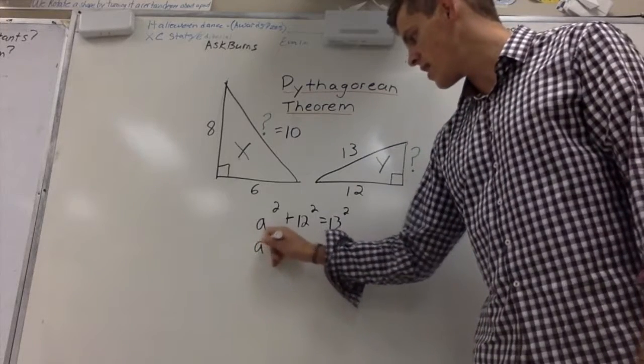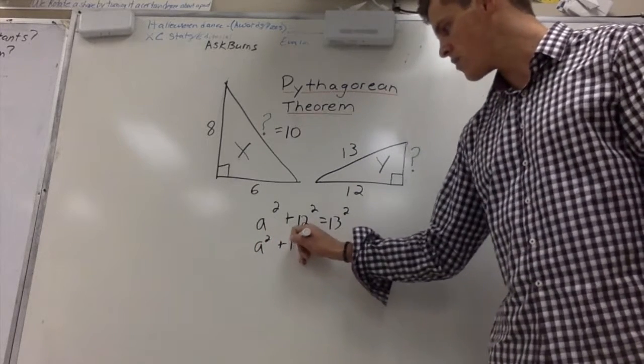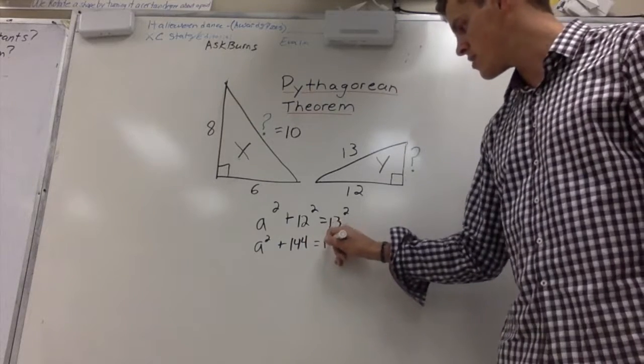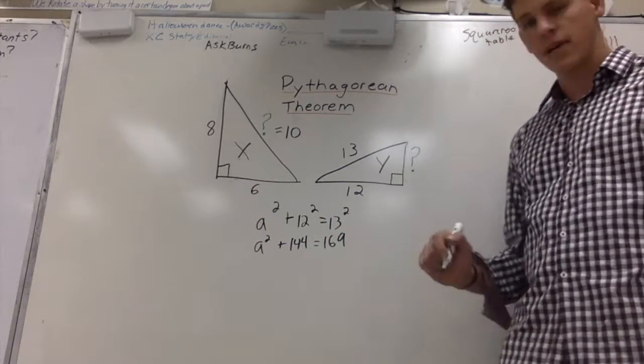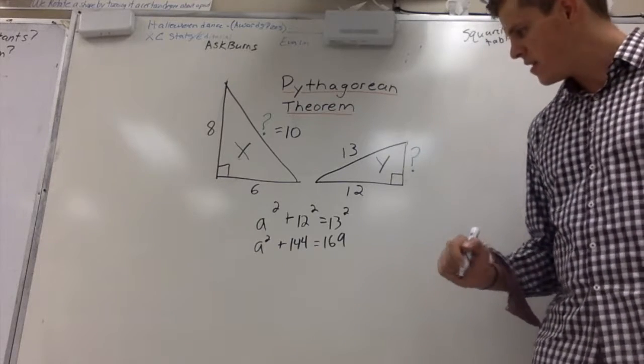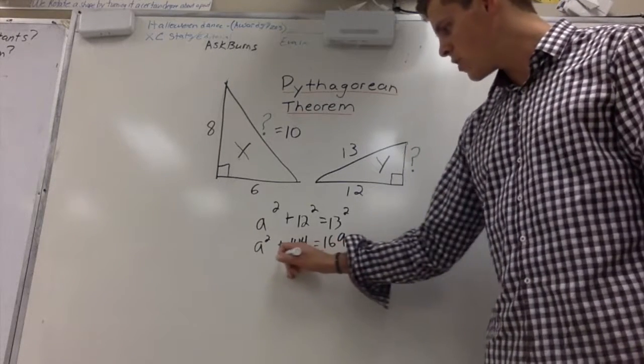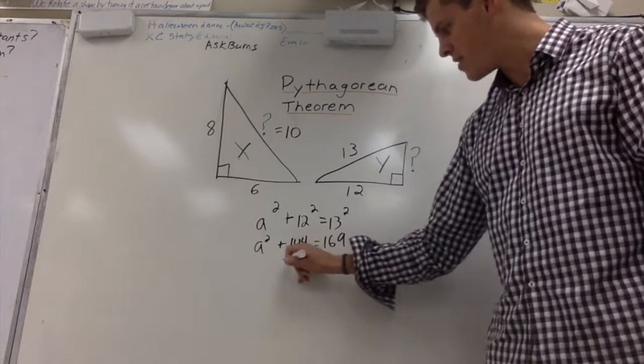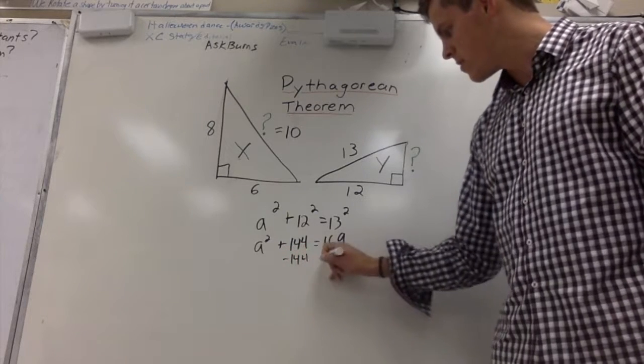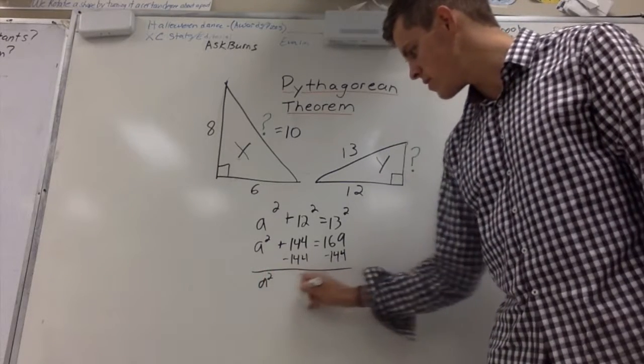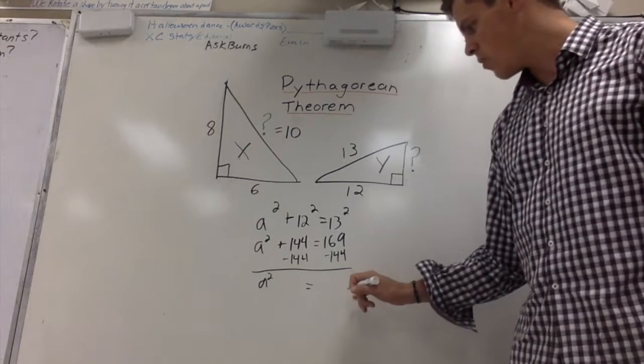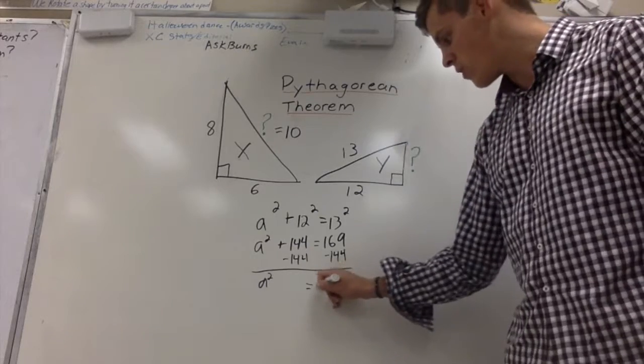Next, I want to take A squared plus 144 equals 169. 12 times 12 is 144, 13 times 13 is 169. From there, you want to subtract from both sides 144, which will leave you with A squared equals, and what we should have left over is 25.